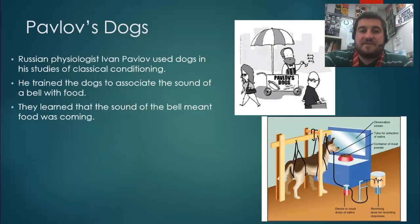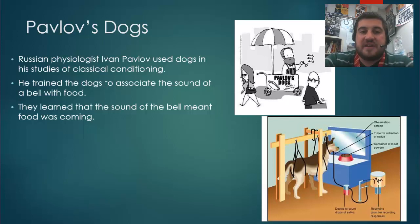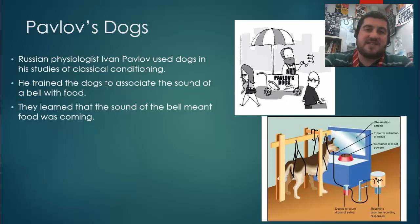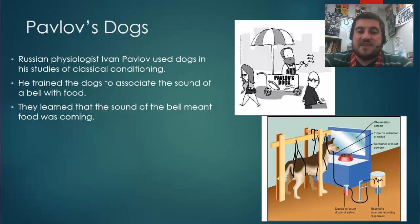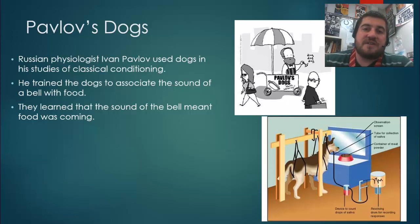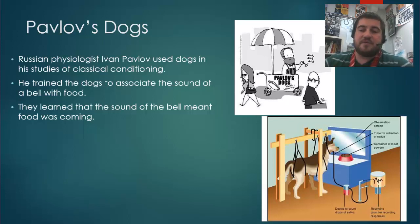Russian physiologist Ivan Pavlov used dogs in his studies of classical conditioning. He was originally trying to measure salivation in dogs when they found food, but he inadvertently trained the dogs to associate the sound of a bell with food. If you have pets, maybe you use a can opener or get into the treats cupboard — your dog or cat knows that's where you keep food and may start to salivate or come running, even if you're opening a can of green beans. Pavlov would ring a bell and give them food, ring a bell and give them food, over and over — and over enough times, as soon as the dogs heard the bell, they knew food was coming and started salivating before the food arrived.